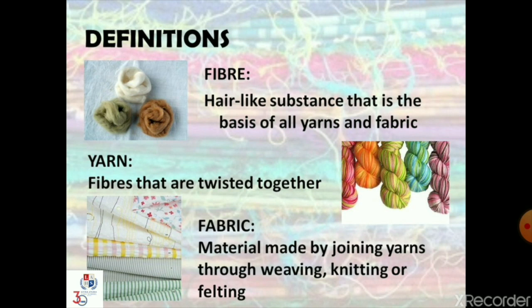What is fiber? Hair-like substance that is the basis of all yarns and fabric is called fiber. Or we can define fibers as long, thin, continuous threads of elements obtained from plants and animals. What is yarn? Fibers that are twisted together are called yarn. Fabric is the material made by joining yarns through weaving, knitting, or felting. In other words, fibers are spun together to form yarns, and yarns together form fabric.